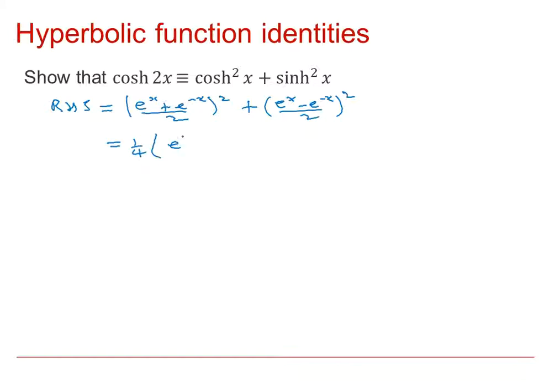We've got a common factor of a quarter which I'm going to pull out of the whole thing. And when I expand the brackets I get an e to the 2x. There will be a 2 in the middle of this expansion, the first expansion. e to the minus 2x. Moving on to the second expansion, e to the 2x minus 2 plus e to the minus 2x. And we can see here that the 2 and the minus 2 cancel out.